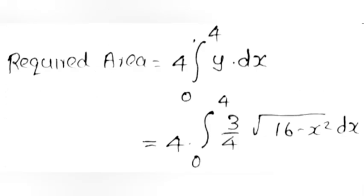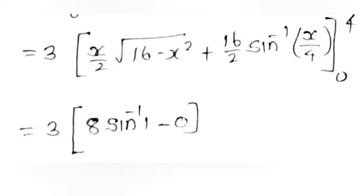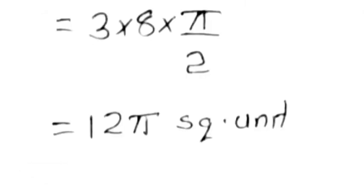Required area = 4∫₀⁴ y dx = 4∫₀⁴ (3/4)√(16 − x²) dx = 3[x/2 · √(16 − x²) + 16/2 · sin⁻¹(x/4)]₀⁴ = 3[8 sin⁻¹(1) − 0] = 3 × 8 × π/2 = 12π square units.